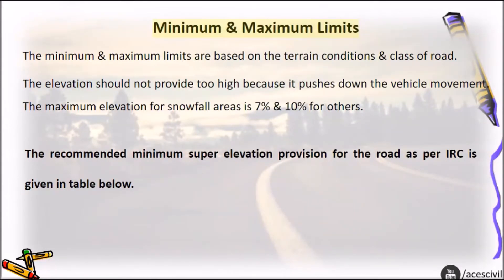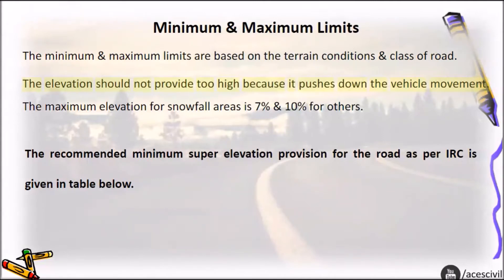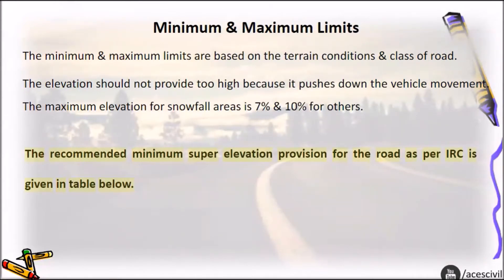Minimum and maximum limits: The minimum and maximum limits are based on terrain conditions and class of road. The elevation should not be too high because it pushes down the vehicle movement. The maximum elevation for snowfall areas is 7% and 10% for others. The recommended minimum super elevation provision as per IRC is given in the table below.